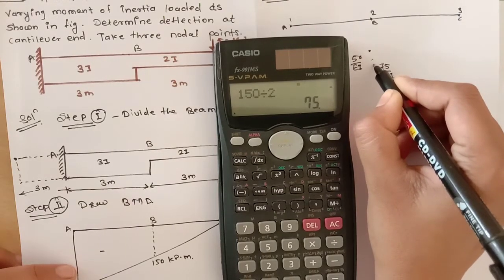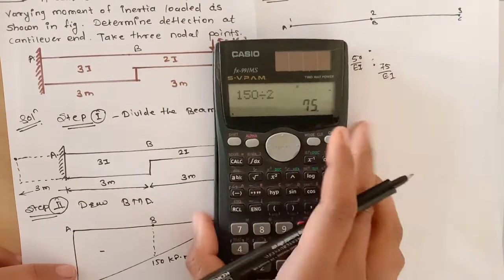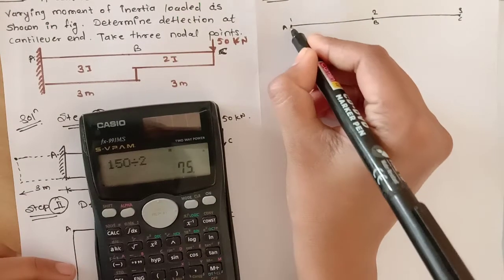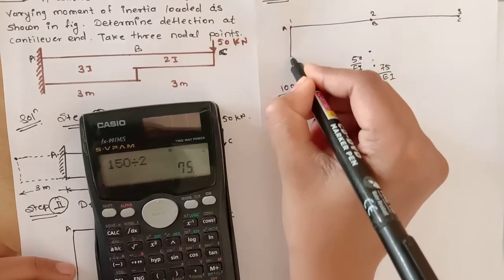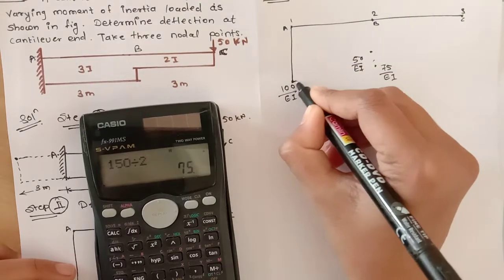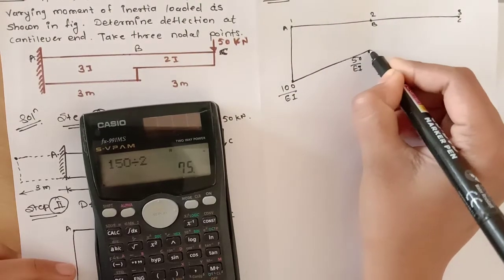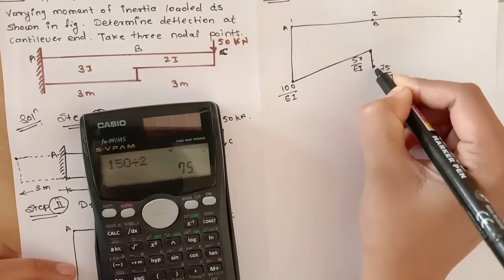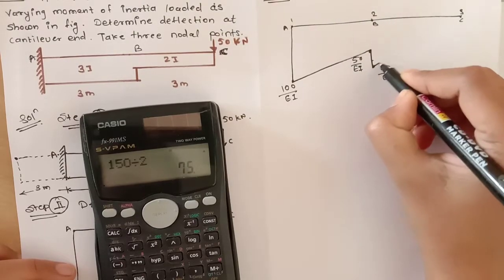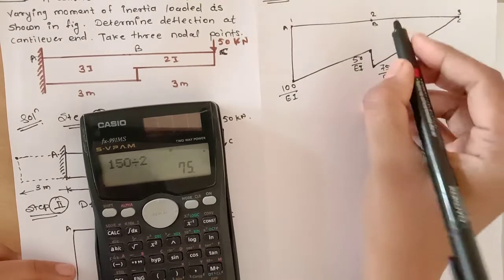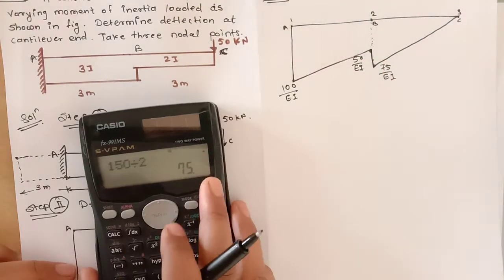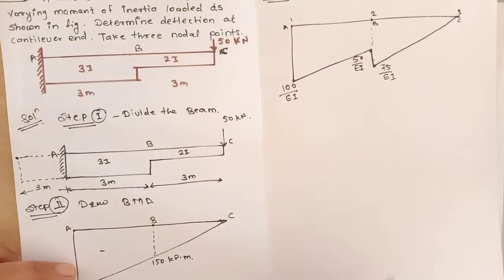The M/EI diagram values are: at point A — 100/EI, at point B (from AB side) — 50/EI, at point B (from BC side) — 75/EI, and at point C — 0. This is our M/EI diagram.